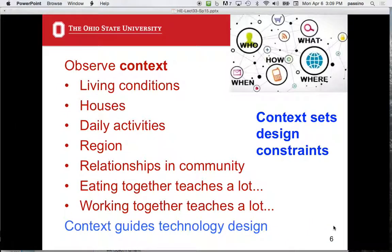First thing: observe context. When you go to a community, you should not avoid seeing how people live and where they live. You start to understand the constraints for the technology — due to weather, rainy season, drought, dryness. These come in a whole myriad of ways: how the houses are, daily activities, the region, the relationships. It's great if you can get a chance to eat together and work together. You learn a lot by eating and socializing with someone.